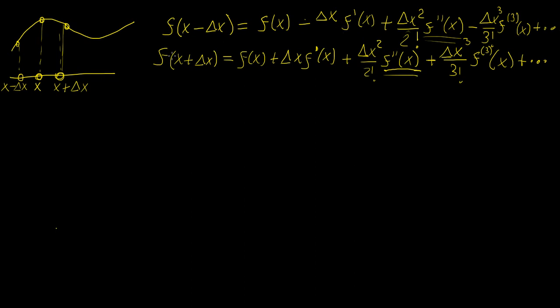So how can we do that by performing an operation between these two equations? Well, we can add them together, and that will get rid of the first derivative. So let's do just that. Let's have f of x plus delta x plus f of x minus delta x. Now we're going to have this plus that which becomes 2f of x.